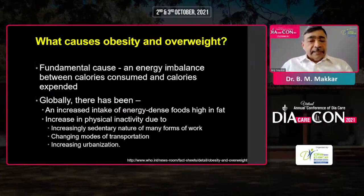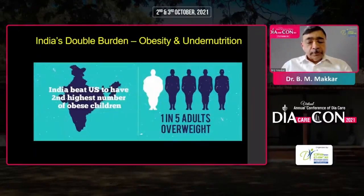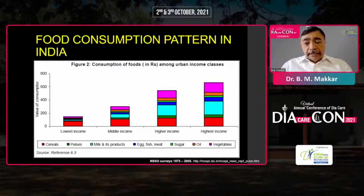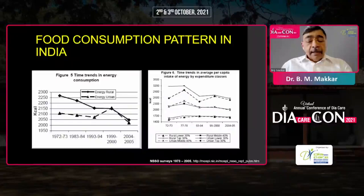The fundamental cause of obesity is energy imbalance, with a global decrease in energy expenditure and increase in availability of energy-dense foods, leading to increasing prevalence. In India, the prevalence of obesity has doubled in the last 10 years, and one in five are obese. If you look at consumption of foods in India across the board, there is high consumption of carbs and energy-dense foods such as oil. In the higher income group, there is also high consumption of milk and milk products. Meat consumption is low as we are largely a vegetarian population.